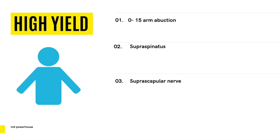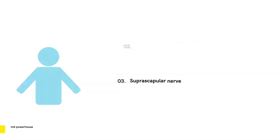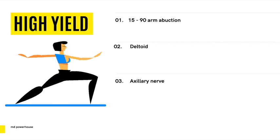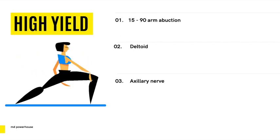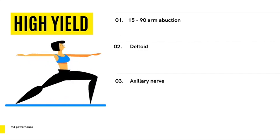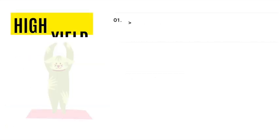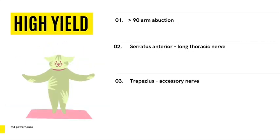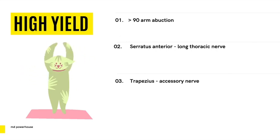After the first 15 degrees of arm abduction, another muscle has to take over — the deltoid muscle. The deltoid is responsible for 15 to 90 degrees of arm abduction and is supplied by the axillary nerve. If you want to abduct your arm greater than 90 degrees, two muscles are responsible: the serratus anterior, supplied by the long thoracic nerve, and the trapezius, innervated by the accessory nerve.